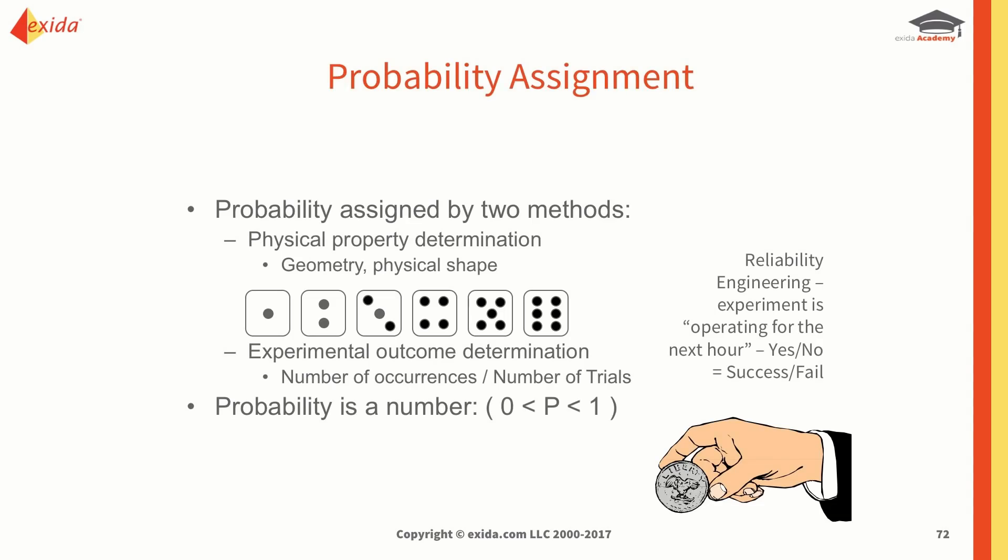The first thing is probability assignment. Probability can be assigned in two ways: it can be assigned due to the physical properties — geometric shape, for example a die has six sides, so there's a geometric shape for that — or you can do it through experimental outcome.